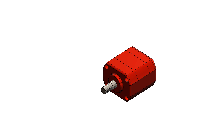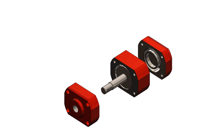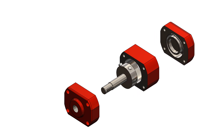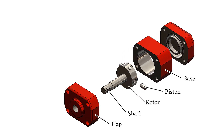Inside impinged radial piston pump design: the main elements are base, piston, rotor, shaft, and cap.